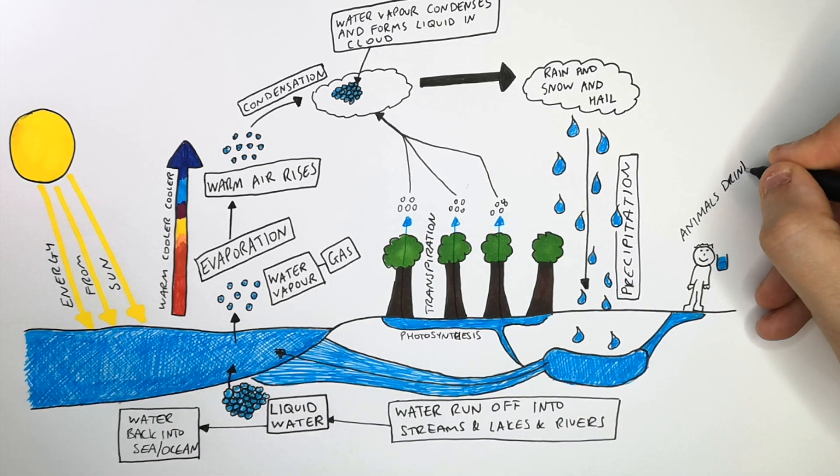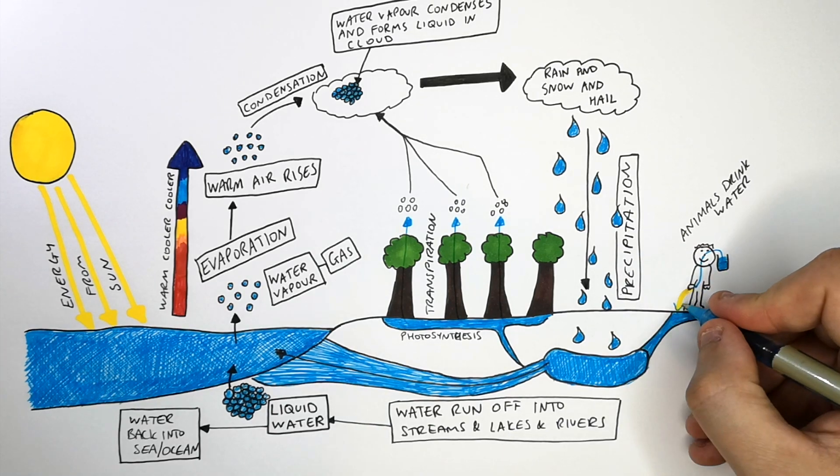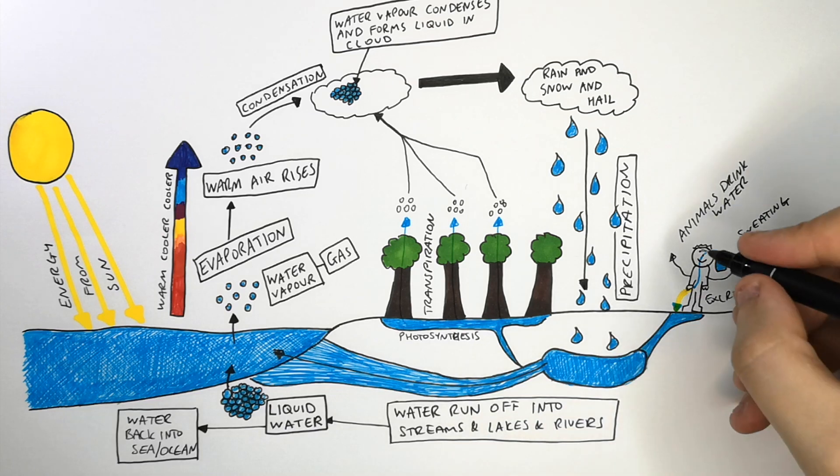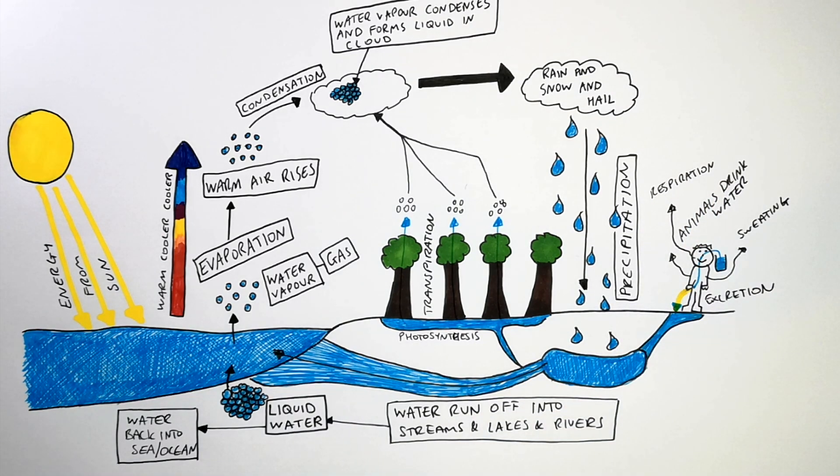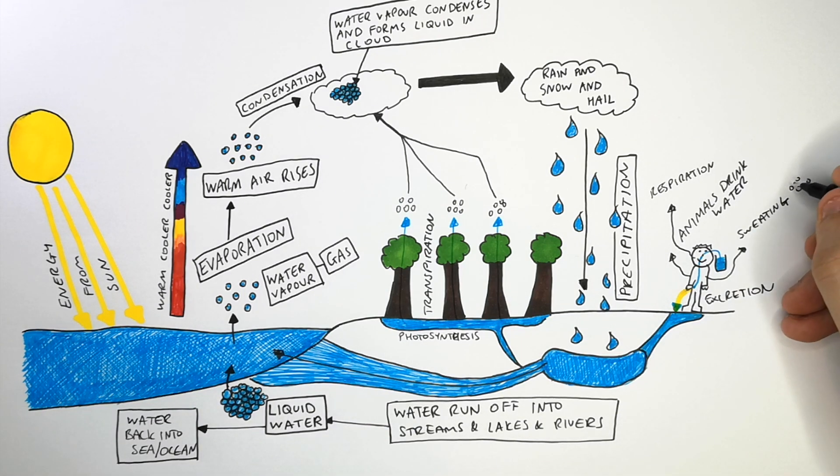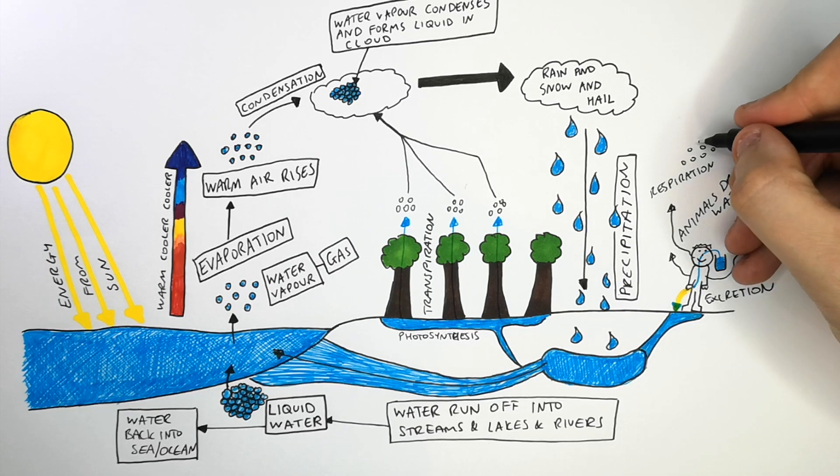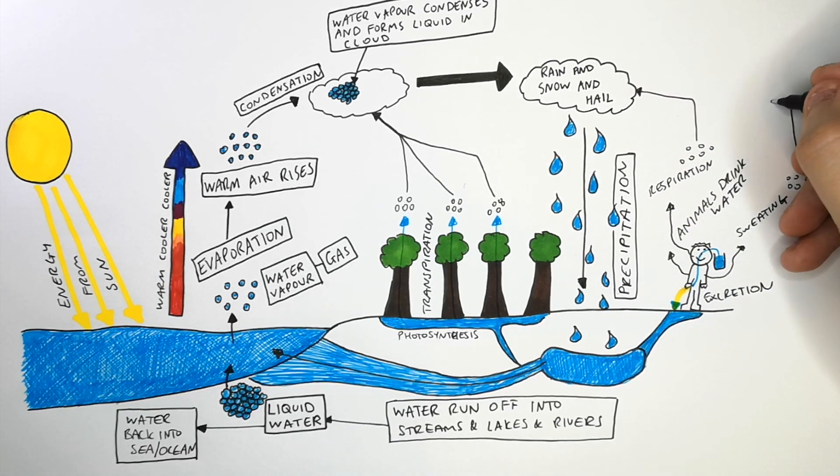Animals are going to drink the water. We then excrete the water or we sweat the water, or water is going to leave our body via the by-product of respiration that we breathe out. And this water vapor is going to rise, condense and then form rain as clouds and fall as precipitation back into the seas and oceans and lakes and rivers.